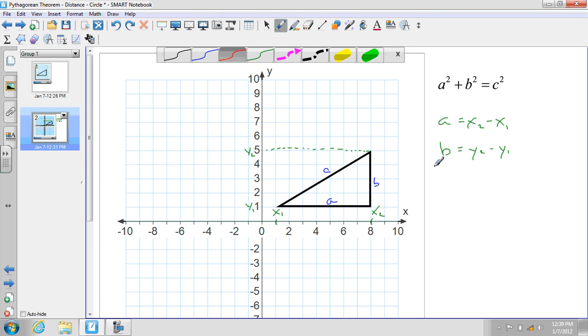I'm going to have x sub 2 minus x sub 1 squared plus y sub 2 minus y sub 1 squared is equal to c squared.